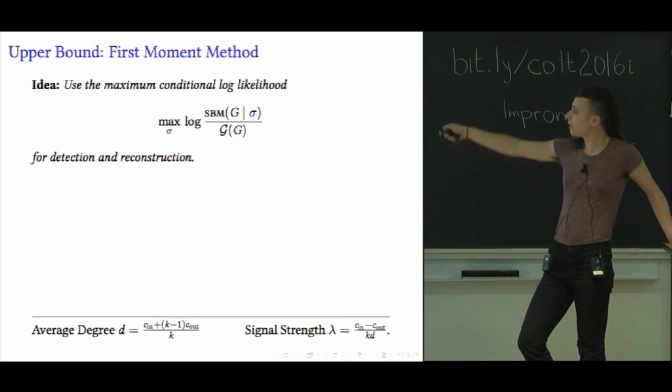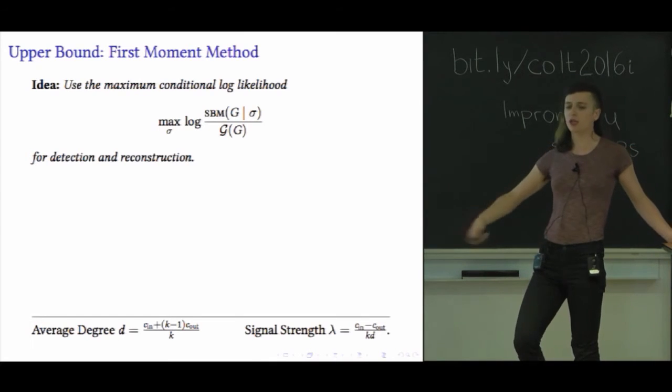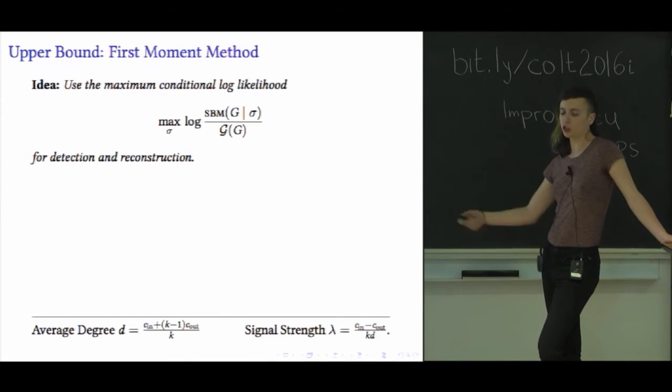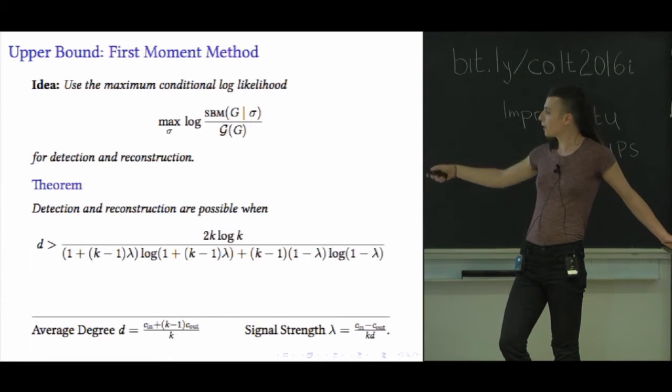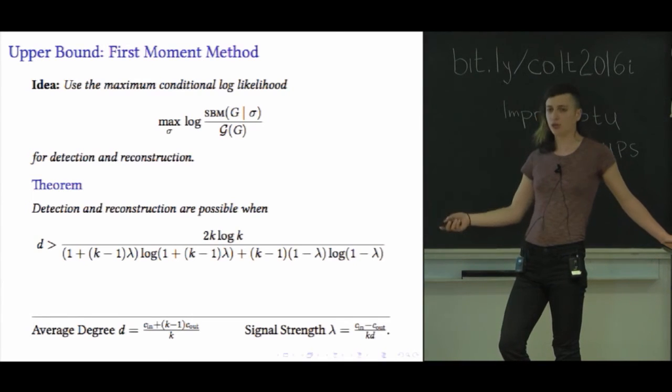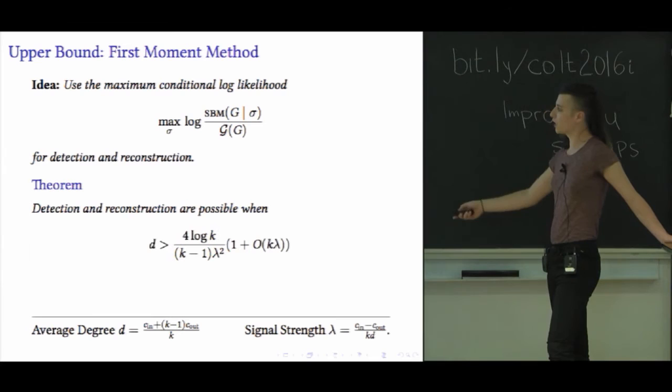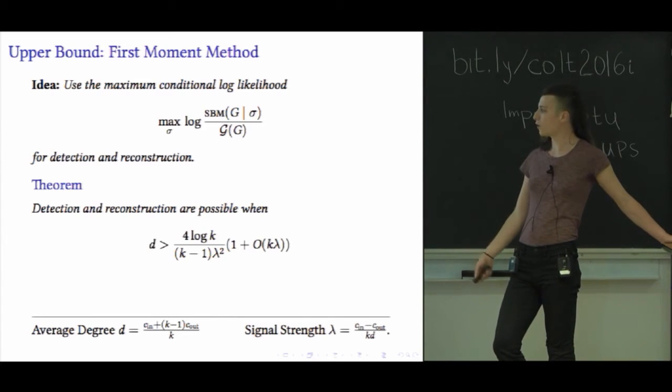To get an upper bound, all I need to do is tell you some test statistic you can use to distinguish these two distributions. Let's focus on deciding whether communities exist as opposed to finding them. The test statistic you should use is this generalized likelihood test where you maximize over all partitions the conditional likelihood ratio of that partition. It's a standard first moment calculation to figure out when this quantity is noticeably lower from graphs generated by the unstructured model than from graphs generated from the structured model with communities. If you just do this computation, you'll find that d has to be larger than this complicated function of k and lambda for this test to work. This is about d larger than 4 log k over (k-1) lambda^2 times some corrections in the regime where lambda is pretty small.